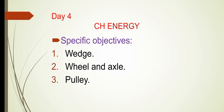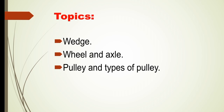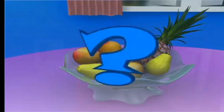Hello students. This is day 4 of the chapter on Energy. The specific objectives of today's class are wedge, wheel and axle, and pulley. In the previous class, we discussed screw and inclined plane and their uses. Today we will discuss wedge, wheel and axle, pulley and types of pulley. Let's get started.